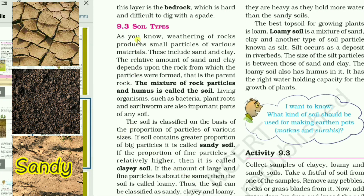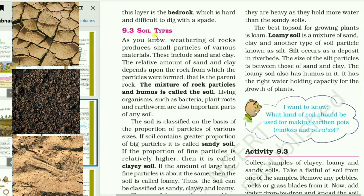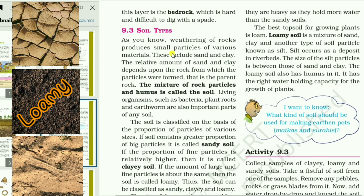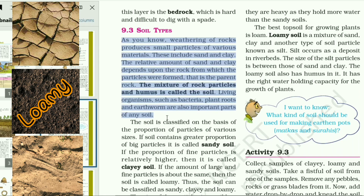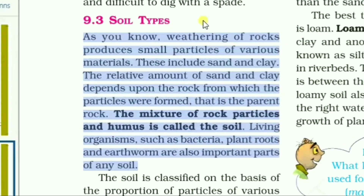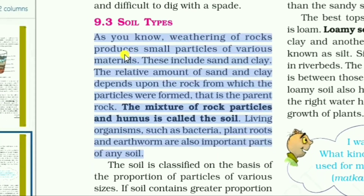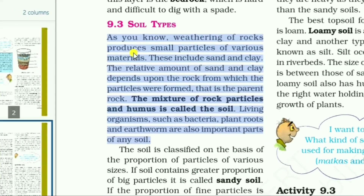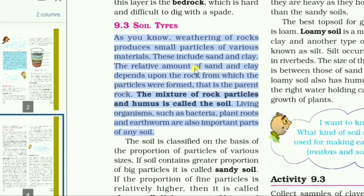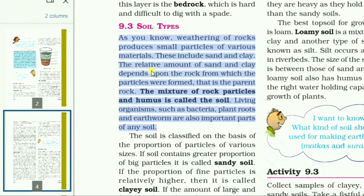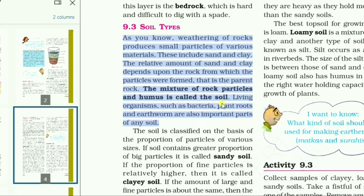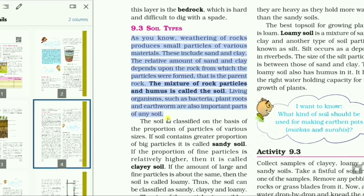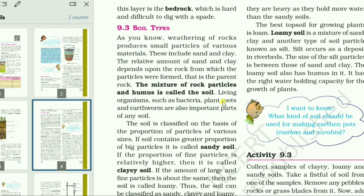Today we will start from soil types, article 9.3. Generally, soils are divided depending upon the size of the particle. As you know, weathering of rocks produces small particles of various materials. These include sand and clay. The relative amount of sand and clay depends upon the rock from which the particles were formed, that is the parent rock. The mixture of rock particles and humus is called soil. Living organisms such as bacteria, plant roots, and earthworms are also important parts of any soil.